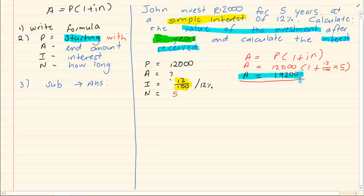After five years John would have 19,200 in the bank but is that how much interest he received? No. What you are going to do is you are going to say 19,200 subtract 12,000.